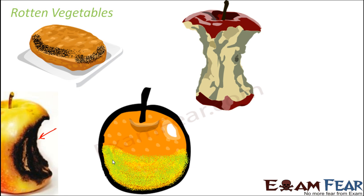Can the rotten orange become alright again? No — the change is irreversible. When you leave fruit or vegetables outside without refrigeration, the environment becomes suitable for the growth of microorganisms like bacteria or fungi, which prefer warm and moist places. These microorganisms start feeding on the fruit or vegetable, gradually turning them into other substances chemically. Compounds of nitrogen and carbon dioxide are formed, and the chemical composition gets altered due to the action of microorganisms. This is why rotten vegetables are an example of a chemical change.